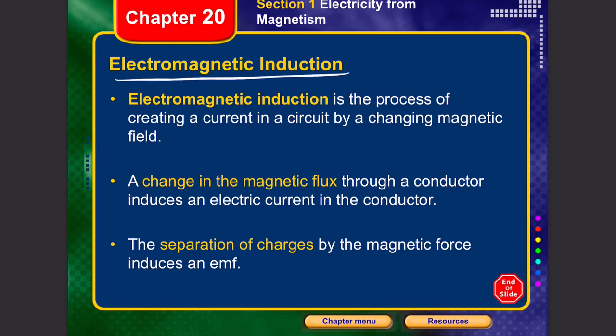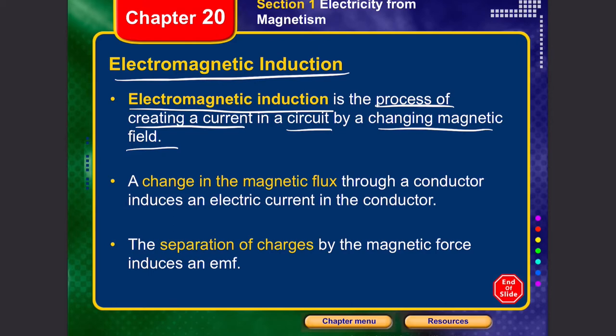Electromagnetic induction is the process of creating a current in a circuit by changing its magnetic field. Before, from current we had a magnetic field; in induction, from a magnetic field we are creating current. This leads us to the main law: Faraday's law of induction.